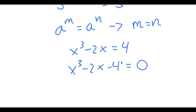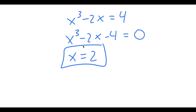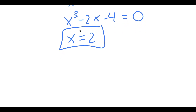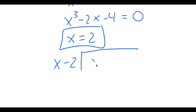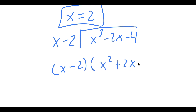To solve this, we need to find one solution first by plugging in numbers. If you plug in x equals 2, the expression equals 0, so x equals 2 is one solution. Since x minus 2 equals 0 is a factor, we divide x cubed minus 2x minus 4 by x minus 2 using long division, and end up getting x minus 2 times x squared plus 2x plus 2 equals 0.